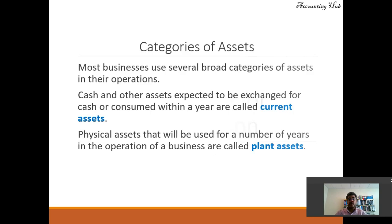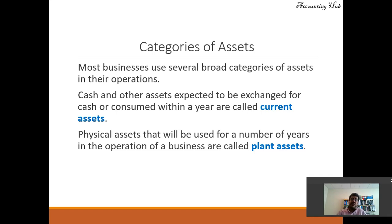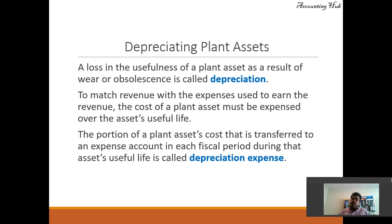For depreciation, first of all, categories of assets. Most businesses use several broad categories of assets in their operations. Assets expected to be exchanged for cash or consumed within a year — such as cash and cash equivalents, accounts receivable, inventory, and prepaid expenses — are called current assets. Physical assets used for a number of years in the operation of a business are called plant assets, or property, plant and equipment. We depreciate these plant assets because the loss in usefulness of a plant asset as a result of wear or obsolescence is called depreciation.